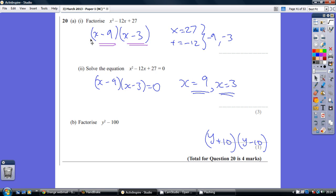So our pair of brackets is x minus 9, x minus 3. And if you were to multiply that out, if you were to do FOIL on that, you'd get back to this.